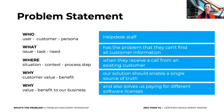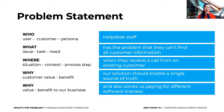The where gives context: 'when they receive a call from an existing customer.' The value: 'our solution should enable a single source of truth.' Notice there is no solution stated — it doesn't say 'we need to build an app or a website.' And the why for business: 'also solve us paying for different software licenses.' This problem statement is your guiding statement for your sprint.